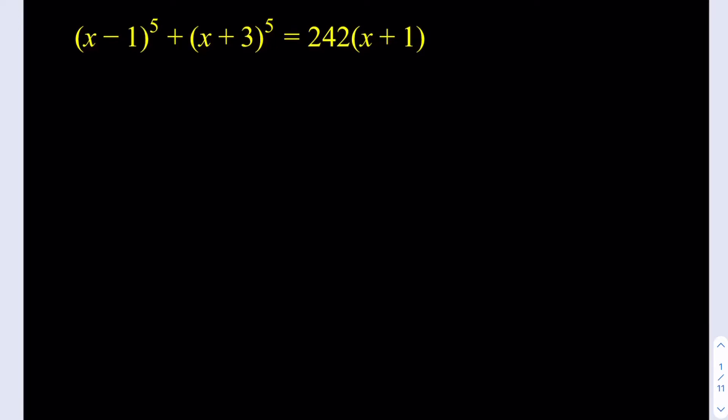Hello everyone, in this video we're going to be solving a polynomial equation of 5th degree. At this point you can pause the video and try the problem yourself first. So we have (x-1)^5 + (x+3)^5 = 242(x+1). We're going to be solving this equation and it's obviously not solvable in the general case because it's a 5th degree equation, it's a quintic, right?